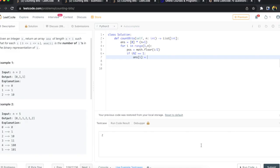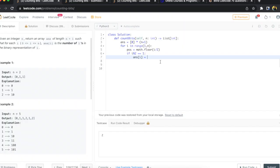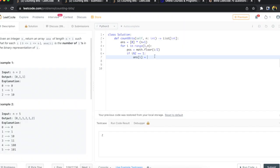This is what we're doing in the odd case. At that index we want to put the answer of that previous position. Maybe I should call this half_position so it's a little bit more clear.